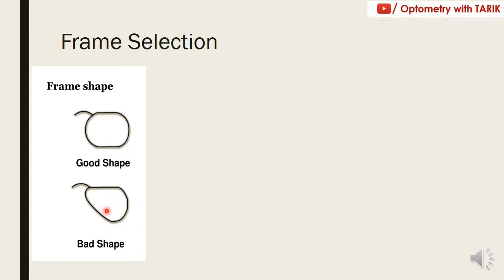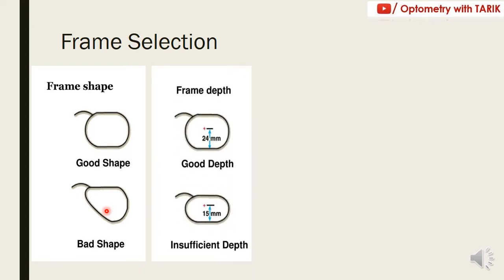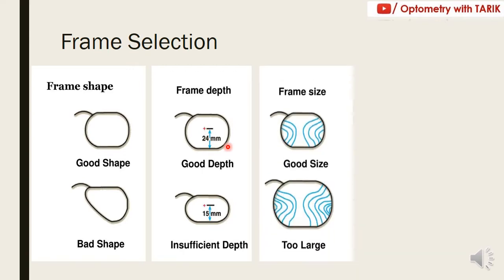The next consideration is frame depth, which is measured from the point where your centration or pupillary center is marked down to the lower rim of the frame. If it is inadequate, the area covered will be less, leading to a lesser field of vision. If it is around 24mm, it will give you the complete field of vision required for a progressive addition lens.